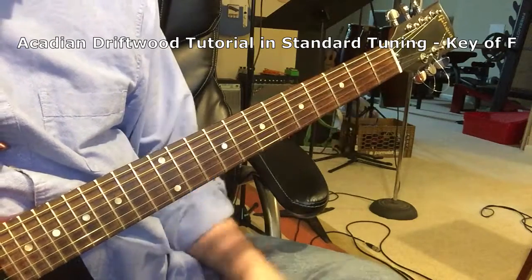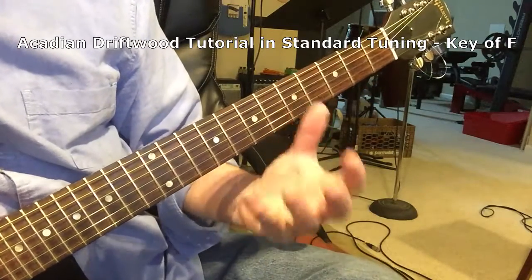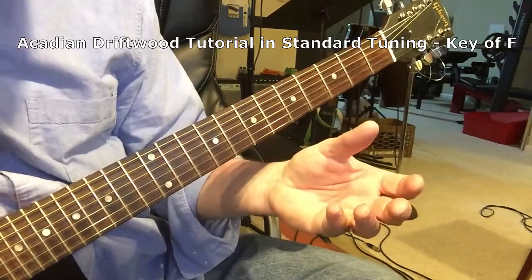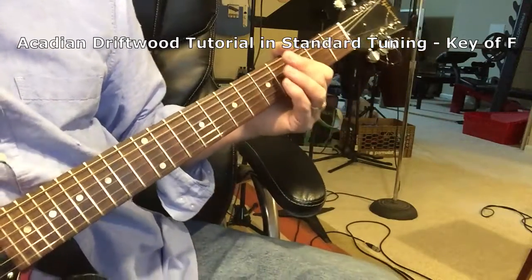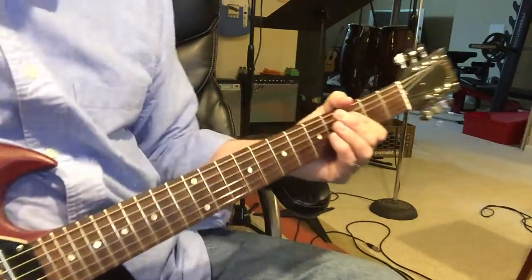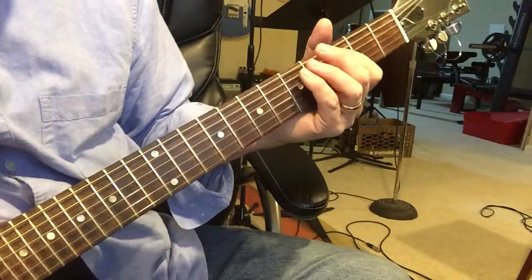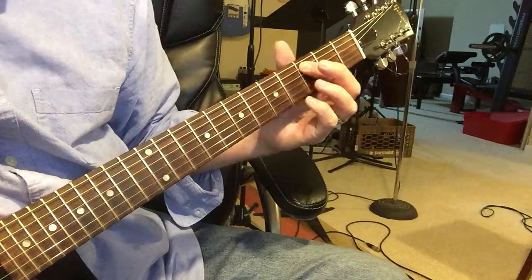There's also an open tuning version that I believe is on the record, but doing it live, especially if there's one guitar or two guitars, you may just want to do it in standard tuning. I think in the last waltz, this is probably pretty close to how Robbie played it, but it works for us. So a little opening riff is going to be this little box.